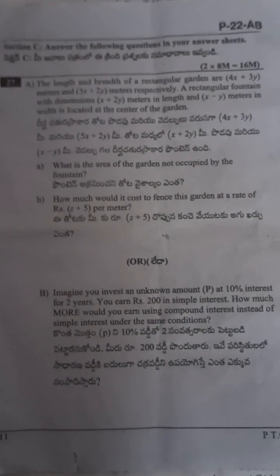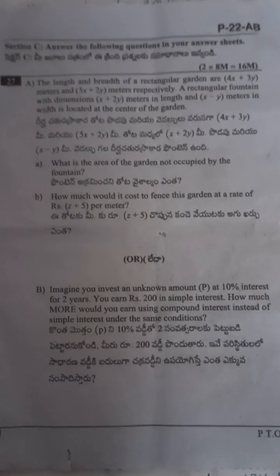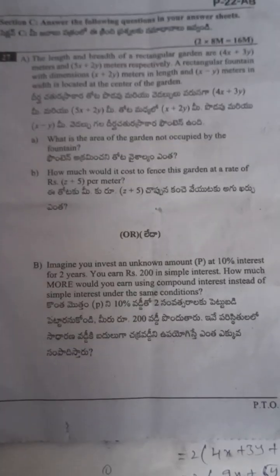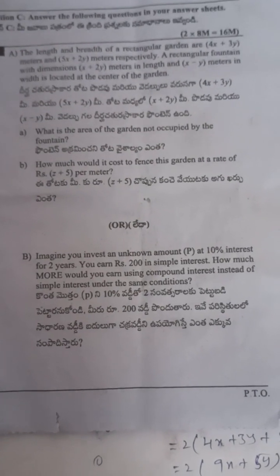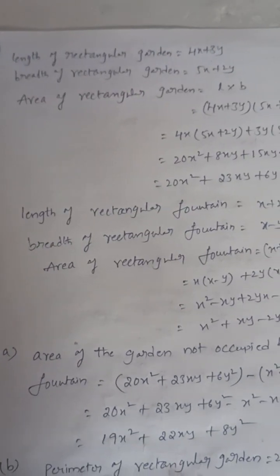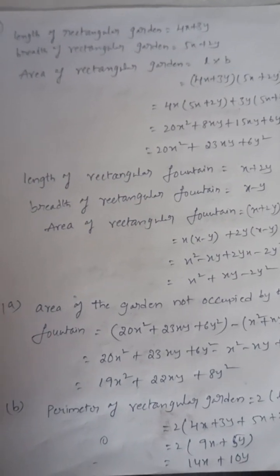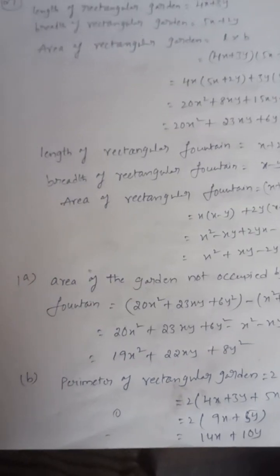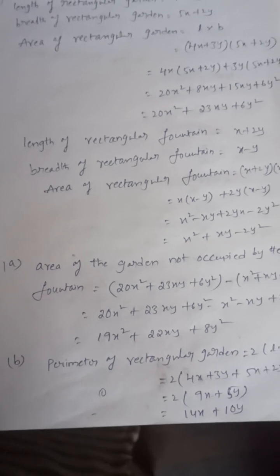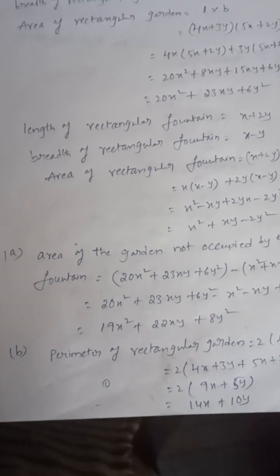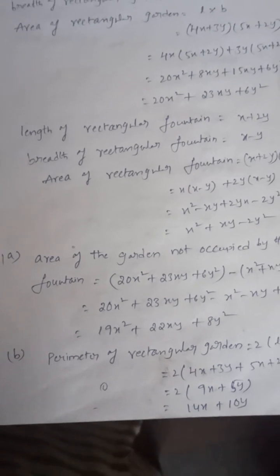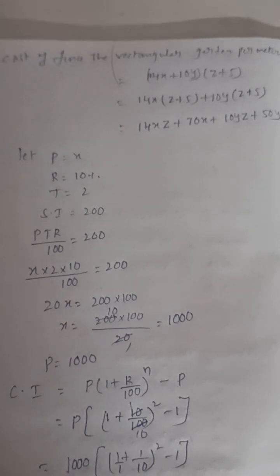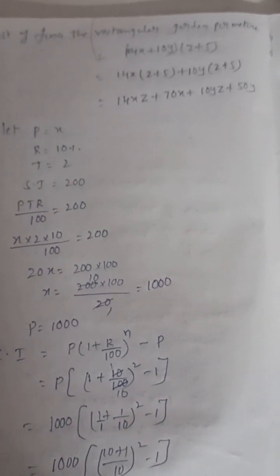Next: the length and breadth of a rectangle garden are (4x + 3y) and (5x + 2y). A fountain inside has dimensions (x + 2y) and (x minus 5). Area of rectangle garden equals (4x+3y)(5x+2y) equals 20x squared plus 23xy plus 6y squared. Area of rectangular fountain equals (x+2y)(x-5) equals x squared plus xy minus 2y squared. Area of garden not occupied by fountain equals 19x squared plus 22xy plus 8y squared. Perimeter of garden equals 2(4x+3y + 5x+2y) equals 14x plus 10y. Cost of fencing equals perimeter into (z+5) equals 14xz plus 70x plus 10yz plus 50y.